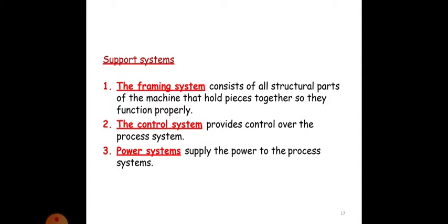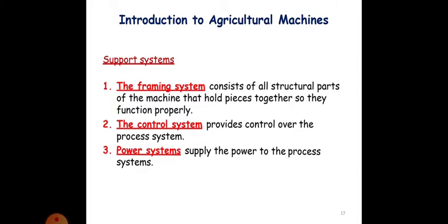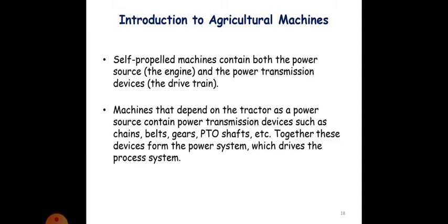The support system. The framing system consists of all structural parts of the machine that hold pieces together so they function properly. The control system provides control over the process system. Power system supplies power to the process system. Self-propelled machines contain both power source, that is engine, and power transmission devices like the drivetrain. Machines that depend on the tractor as a power source contain power transmission devices such as chains, belts, gears, PTO shafts, etc. Together these devices form the power system which derives the process system.